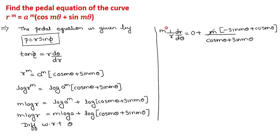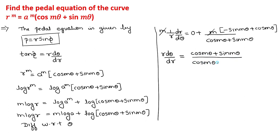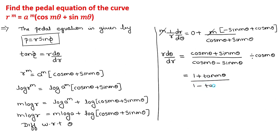The M on the left-hand side and M on the right-hand side cancel. Taking the reciprocal, R dθ/dR equals (cos Mθ + sin Mθ) divided by (cos Mθ − sin Mθ). Dividing all terms by cos Mθ: cos/cos = 1, and sin/cos = tan Mθ, giving (1 + tan Mθ)/(1 − tan Mθ).